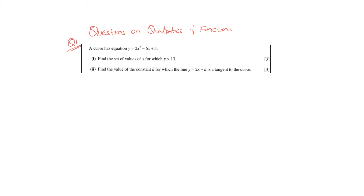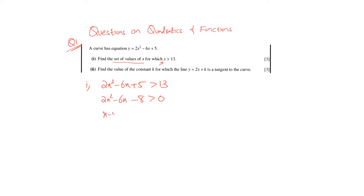Let's begin with this question. You have a quadratic equation given as 2x² minus 6x plus 5. In the first part you are being asked to find those values of x for which y — meaning your function or curve — is greater than 13. So we set 2x² minus 6x plus 5 greater than 13 and simplify this equation.